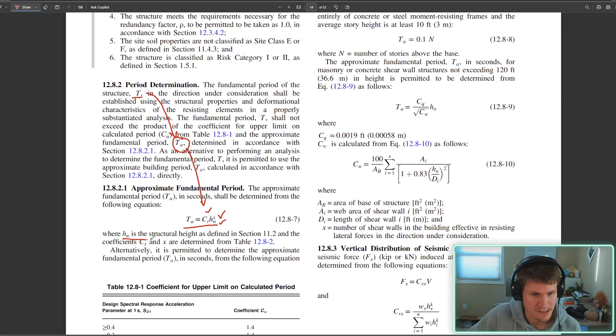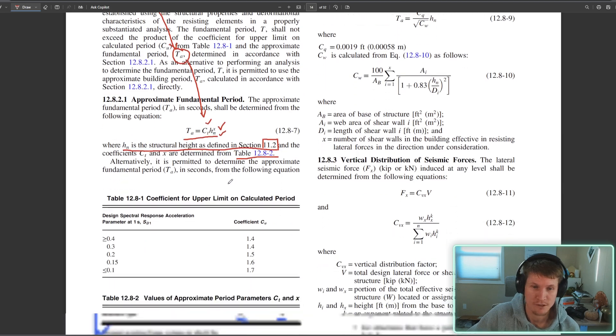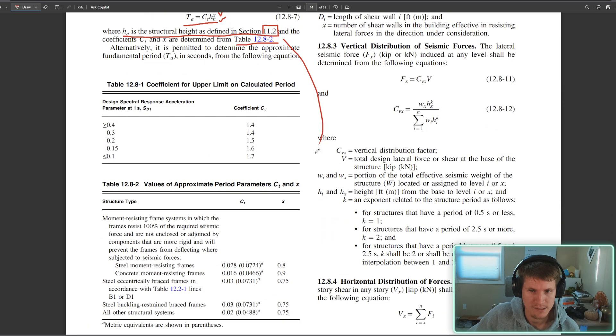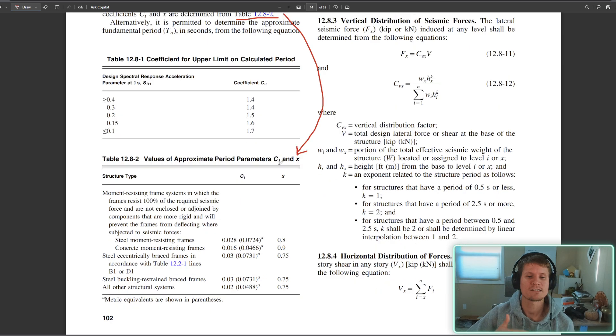It just has three variables: C_t, h_n raised to the x. The first one, h_n, is simply the structural height as defined in section 11.2. We have three really basic rectangular shaped structures here today, so h_n is literally just the height of each from ground. I have that provided. If you missed it, C_t and x are coefficients that are defined in table 12.8-2.